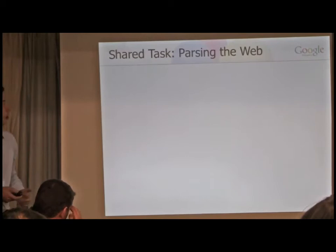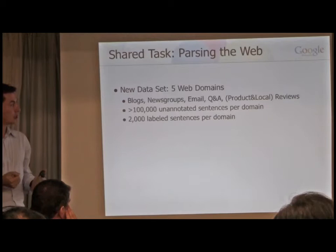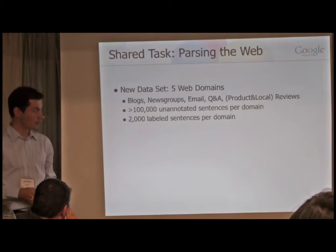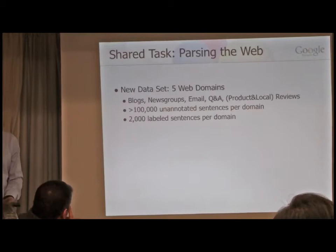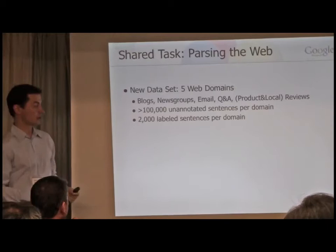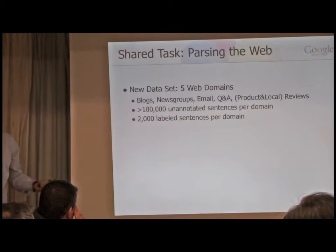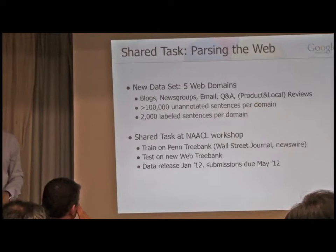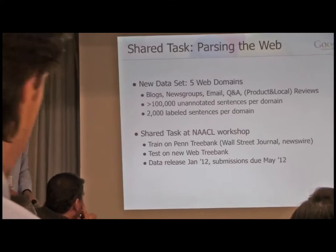Before finishing, Google and the LDC together have created a new web treebank. It's not large enough for training, but it provides an interesting test dataset with five domains. For each domain we have 2,000 labeled sentences and more than 100,000 unlabeled sentences for unsupervised adaptation. We're organizing a shared task, and I'd encourage anyone interested to participate.